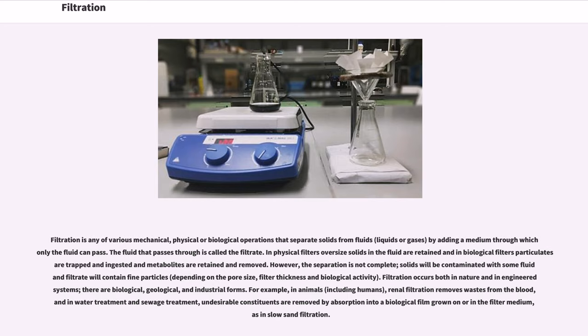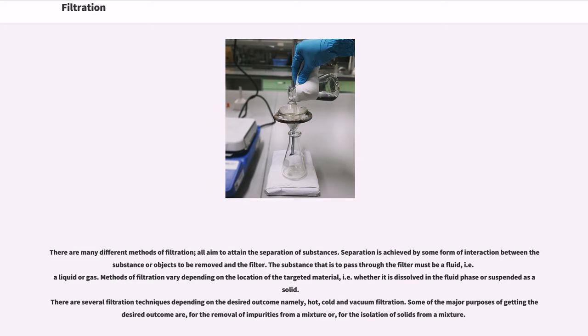Filtration occurs both in nature and in engineered systems. There are biological, geological, and industrial forms. For example, in animals, including humans, renal filtration removes wastes from the blood, and in water treatment and sewage treatment, undesirable constituents are removed by absorption into a biological film grown on or in the filter medium, as in slow sand filtration.